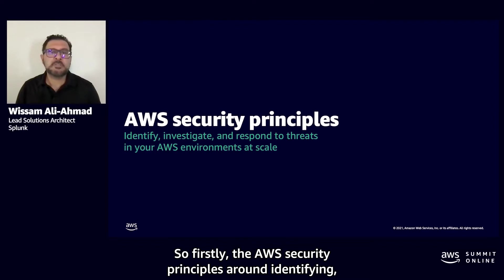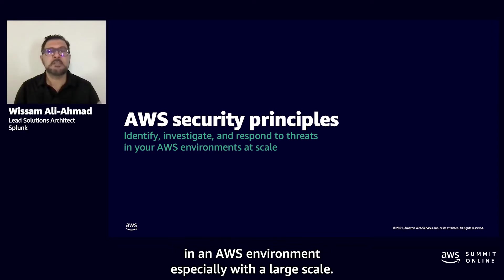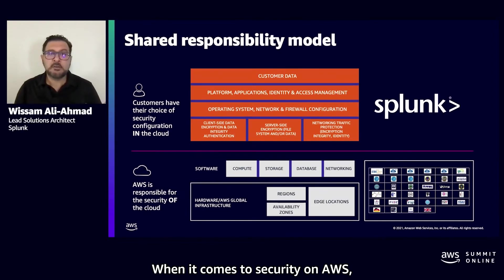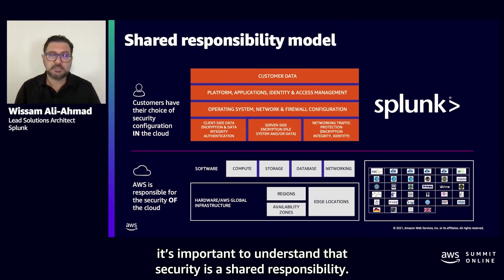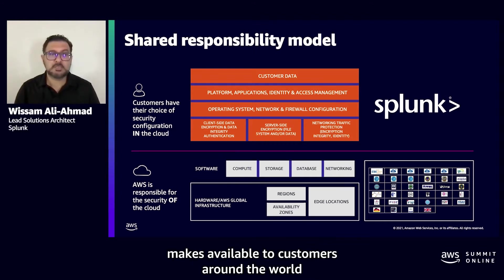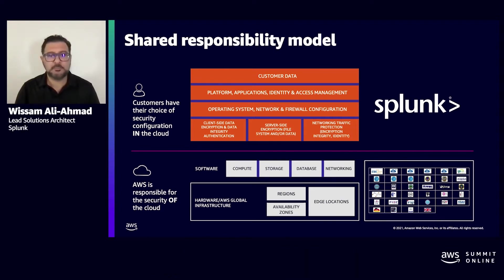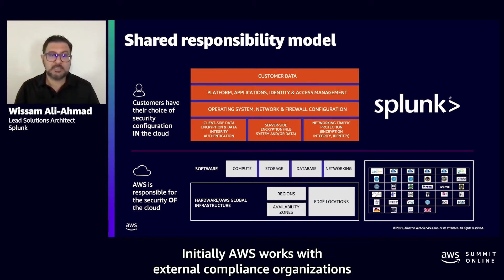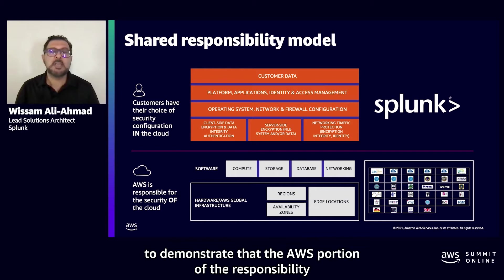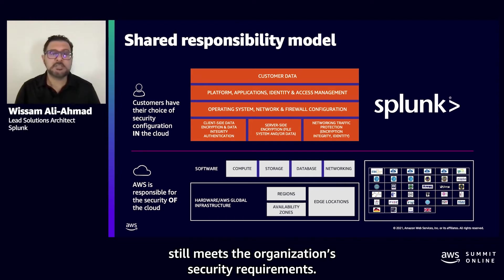Firstly, the AWS security principles around identifying, investigating, and responding to threats in the AWS environment, especially at large scale. When it comes to security on AWS, it's important to understand that security is a shared responsibility. AWS is responsible for security of the cloud. This includes the global infrastructure that AWS makes available to customers around the world, and the software powering compute, storage, database, and network. Additionally, AWS works with external compliance organizations to demonstrate that the AWS portion of this responsibility meets the organization's security requirements.